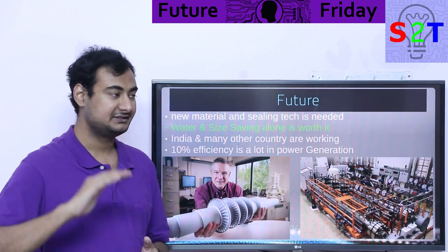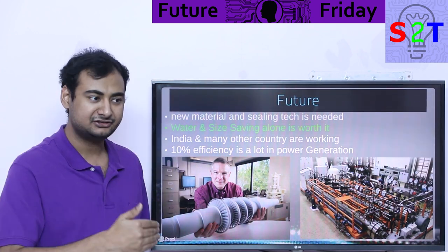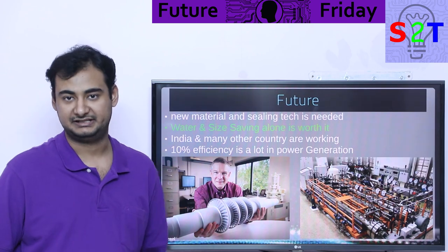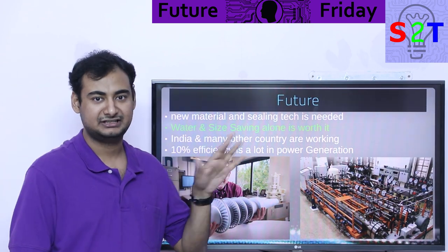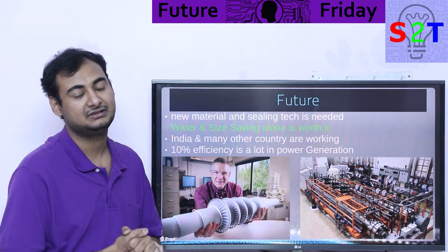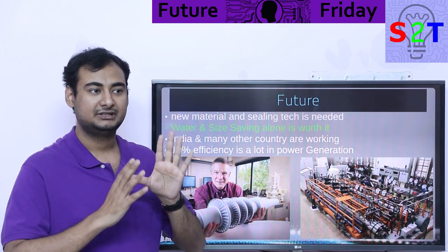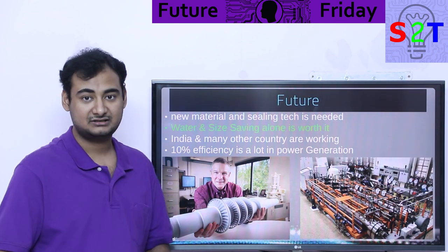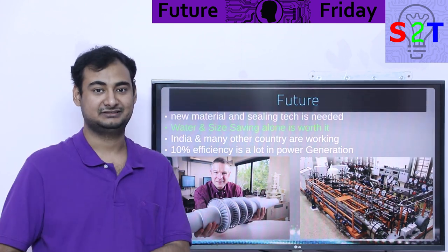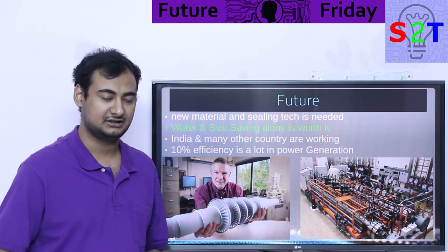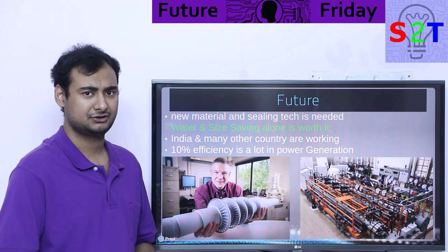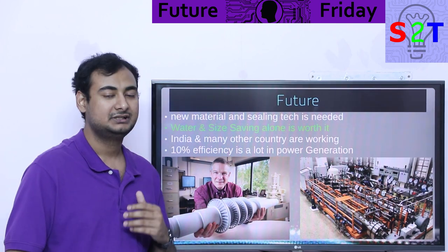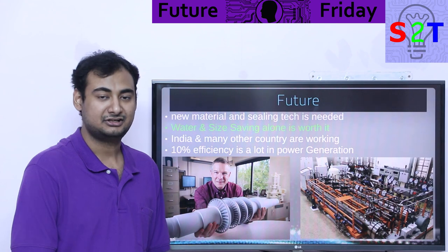A lot of countries are pouring money into this, and 10% efficiency improvement is the achievable goal in the near term. In 2018, mathematicians calculated that if all turbines in the USA were converted to supercritical CO2, the carbon savings would be equivalent to the entire carbon footprint of India's power plants. That's how big an impact we're talking about — over 10% efficiency gain in every single turbine means a huge amount of CO2 would be saved.